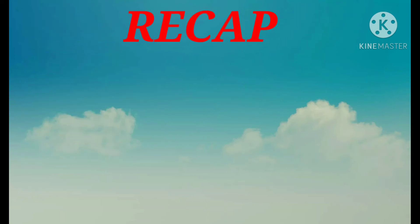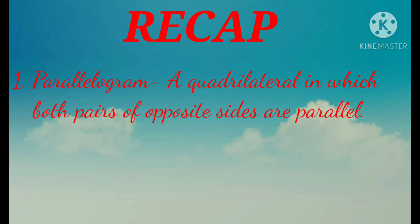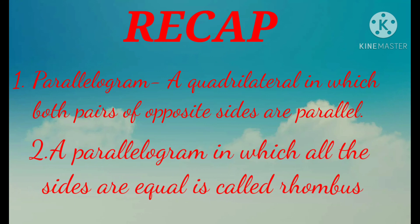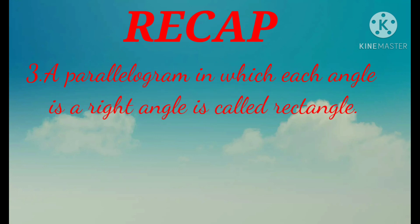Recap. A parallelogram is a quadrilateral in which both pairs of opposite sides are parallel. A parallelogram in which all the sides are equal is called a rhombus. A parallelogram in which each angle is a right angle is called a rectangle.